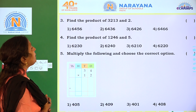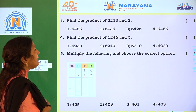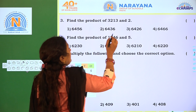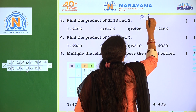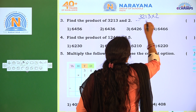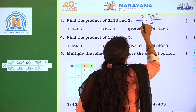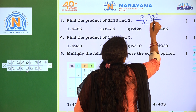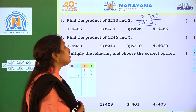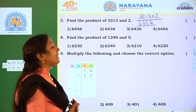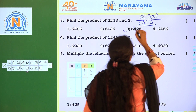Next one: find the product of 3,213 into 2. Multiply: 2 3's are 6, 2 1's are 2, 2 2's are 4, 2 3's are 6. The answer is 6,426, which is the correct option — option 3.